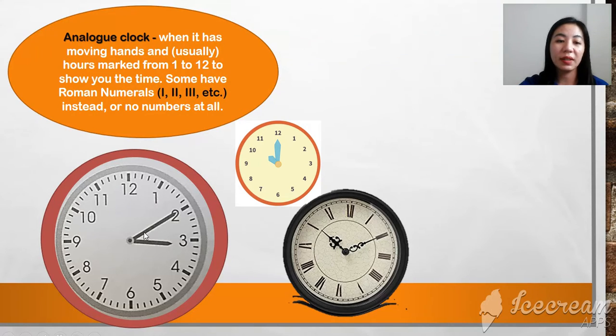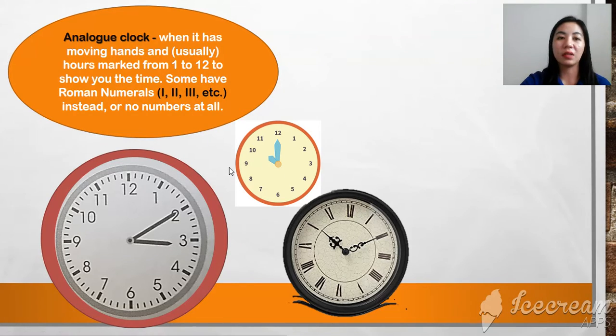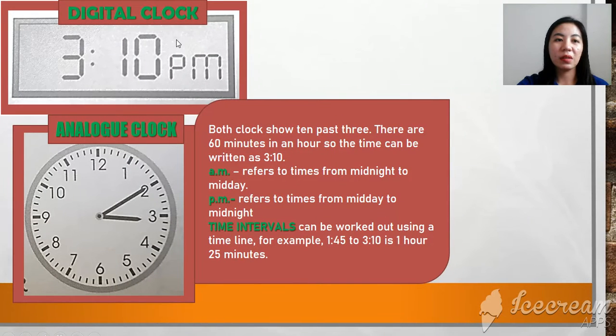This is the hour hand, I mean the minute hand and the hour hand. This is the example of Roman numeral 1, 2, 3 until 12. These are the examples of analog clock. Here for digital clock, it's 3:10 PM.